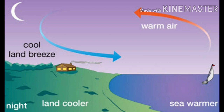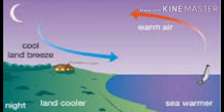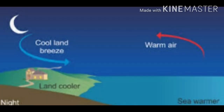At night, the hot land cools much faster than the warm sea water. Due to this, the land becomes cool very quickly but the sea water remains warm for a much longer time. So, during night, the hot air over the warm sea rises upwards and cooler air from the land blows in towards the sea in the form of a breeze. The breeze blowing from the land towards the sea is called a land breeze. Land breeze blows only during the night when the sea water is hotter than the land.